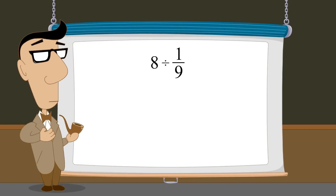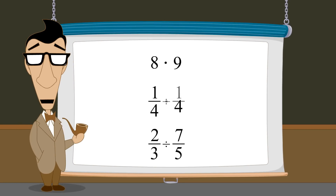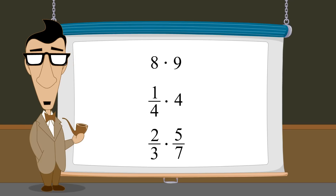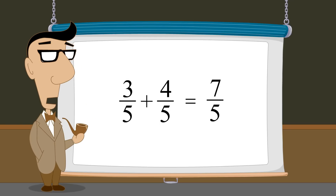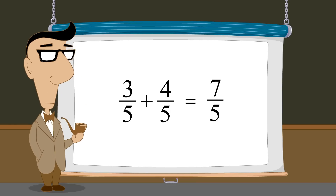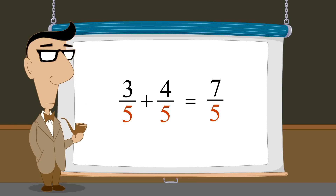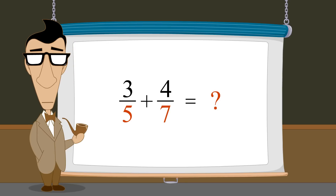So we have seen that when working with fractions, division can be converted to multiplication by the divisor's reciprocal. We also saw in the previous chapter how to add and subtract fractions as long as the fractions have the same denominators. In the next lecture, we will see how to add and subtract fractions with different denominators by finding a common denominator.